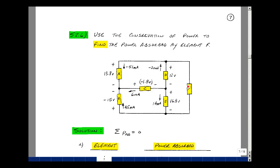Given the circuit with some measurements of voltage and current, can you use the conservation of power to find the power absorbed by element F?